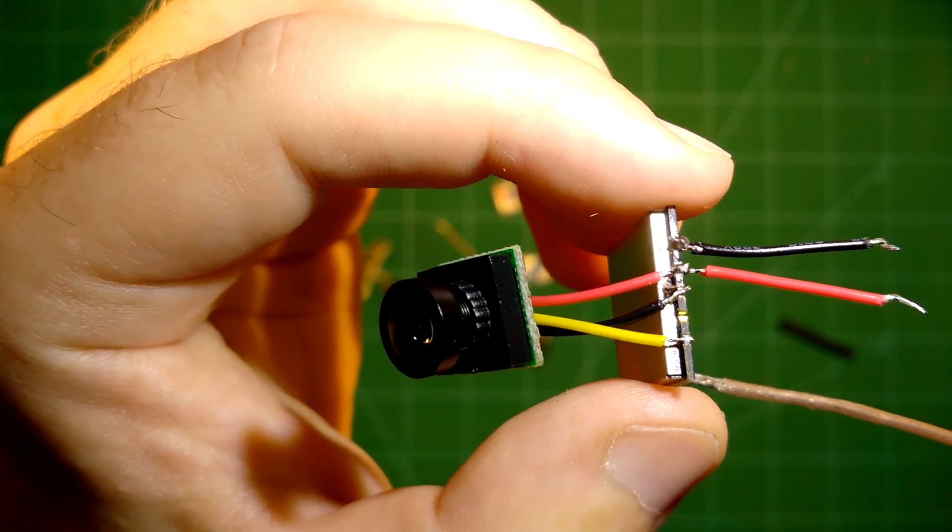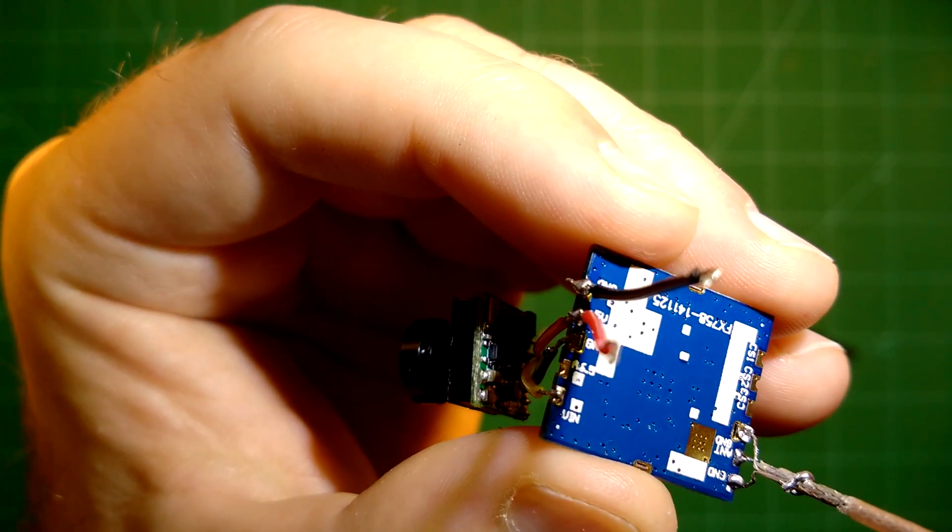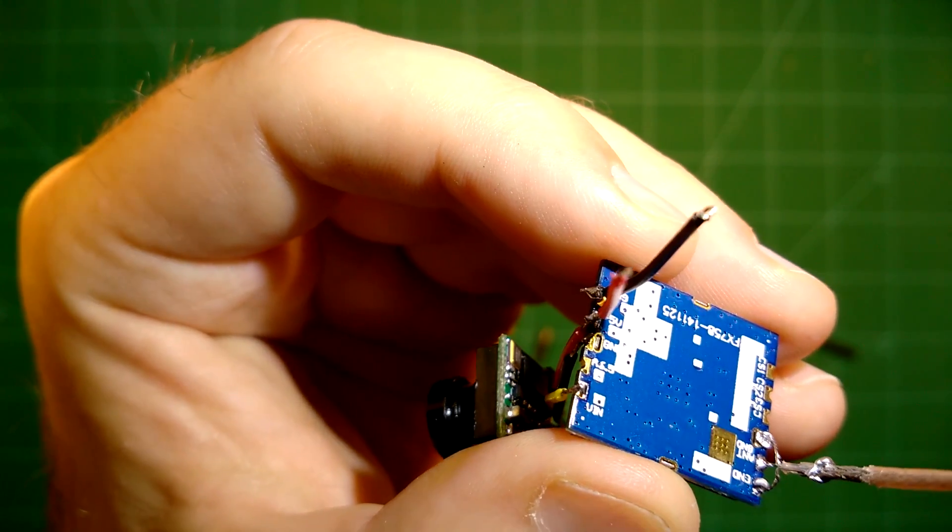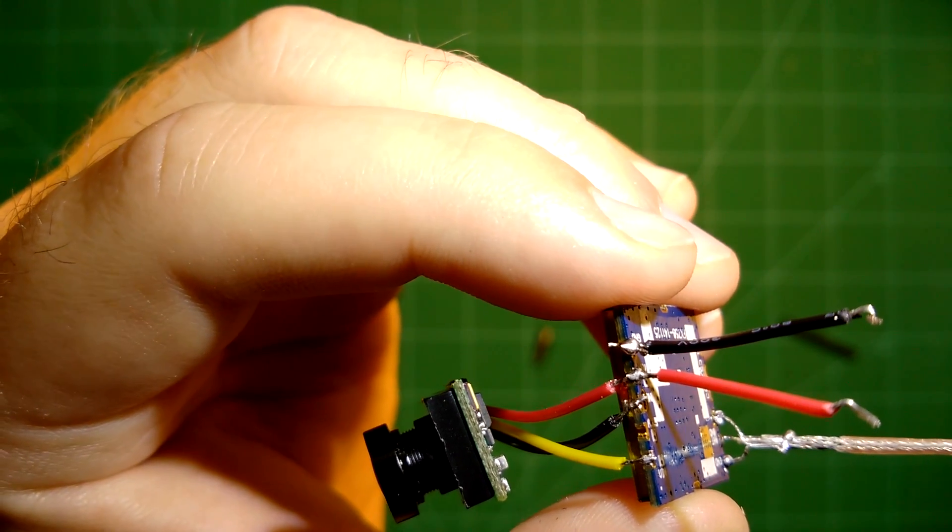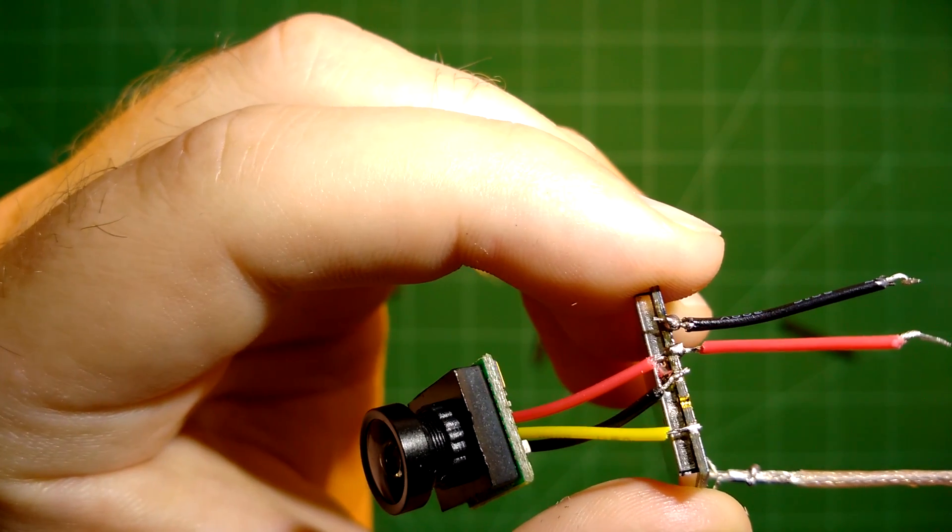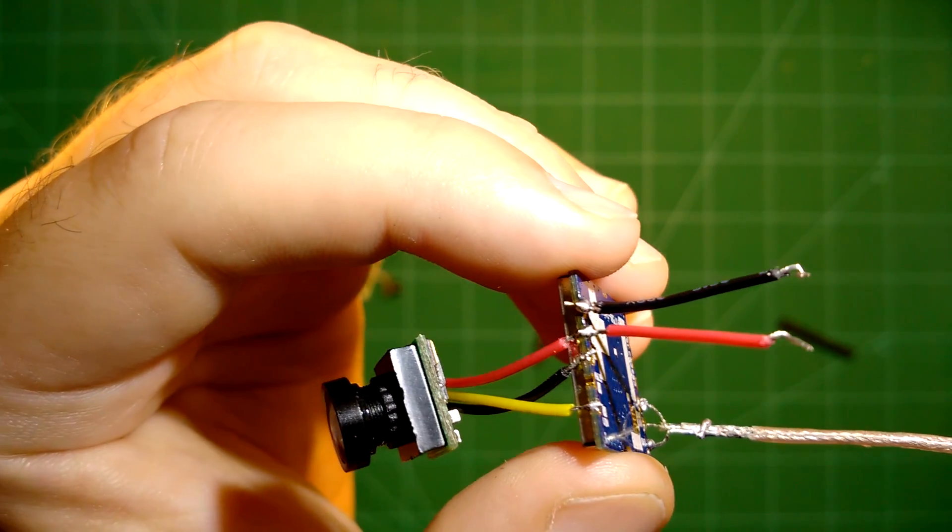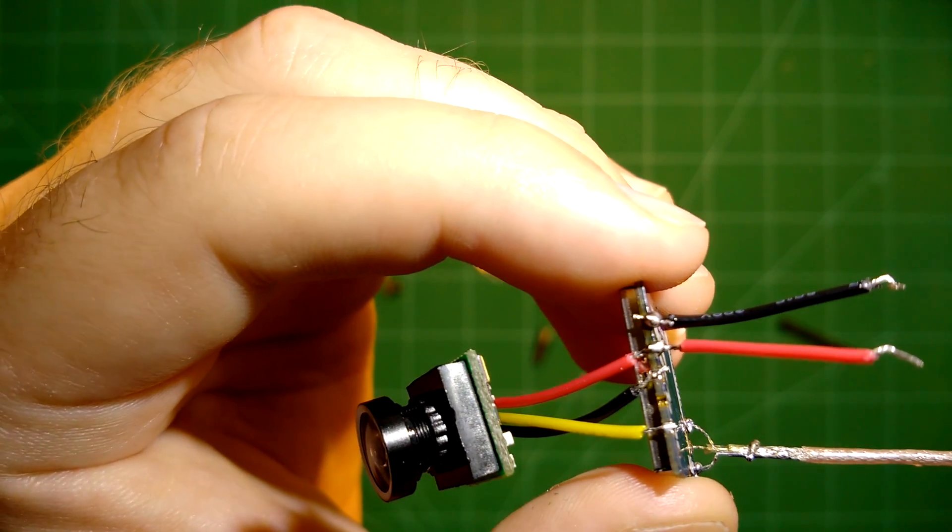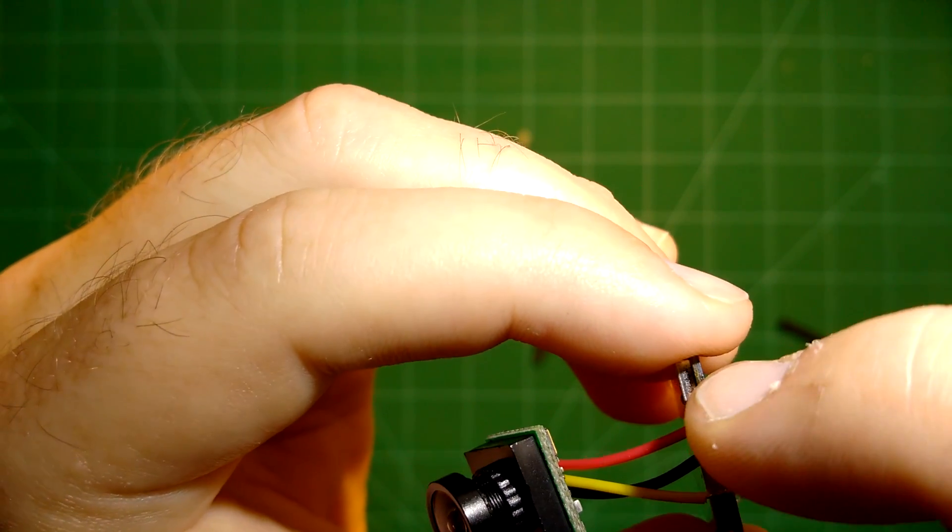So as you can see the yellow cable is of course the video out of the camera which goes to this video in port here. And then we have mass, the black cable which goes to the ground here. And of course the voltage, the five volt power in for the camera which goes to the same pin than the actual volt in for the LiPo. So as you can see there are actually two ground pins here which I used. The module provides these so I use them both because it makes it easier to hook up the camera.